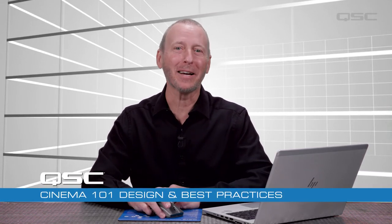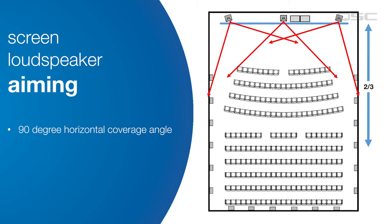Let's start back up again, moving on to loudspeaker aiming. Horizontal coverage of most cinema screen channel loudspeakers is about 90 degrees. For a typical room, best practice is to aim all three screen channel loudspeakers so that they converge at a point about two-thirds into the seating area. Front rows are usually well within the coverage angle as long as they're not too close to the screen. This achieves the best coverage with good stereo imaging for the most seats possible.